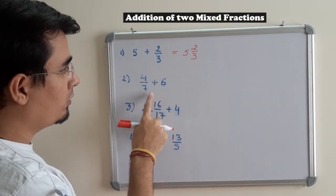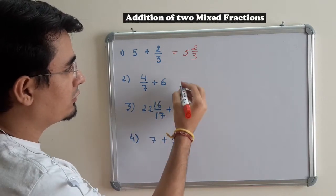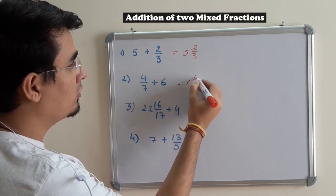This is a whole and a proper fraction, so I will be getting 6 4/7.